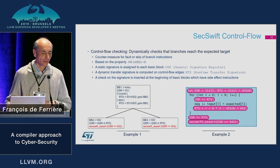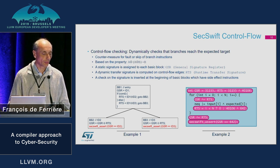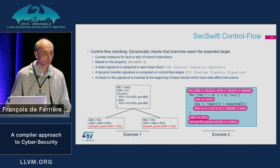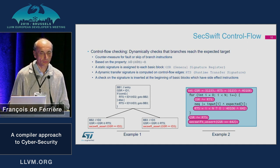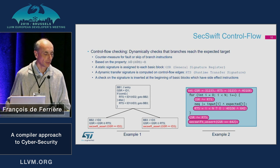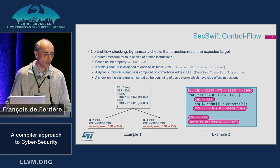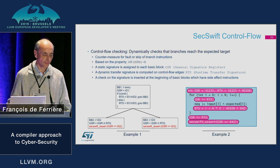The third point is control flow checking — to protect the code against an instruction skip and also errors on branch instructions. This is based on the property of the XOR operator. We use two variables: a General Signature Register (GSR), which contains the signature of the currently executing basic block, and a Runtime Transfer Signature (RTS), built at the end of the basic block. It contains an XOR between the current signature and the signature of the destination block. On the left you have the control flow graph representation, and on the right the pseudo-C code representation.